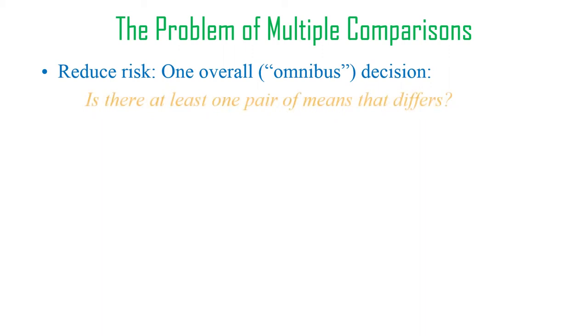One of the things we do is we do one overall test. The first test we do is like a gateway test. We say, is there at least one pair of means that differ? Can we find at least one statistically significant difference in all these 28 possibilities? If we could do that with a single test with only one alpha that we're messing with, and so that's not increasing any family-wise error rate because there's only one test, that would be nice.